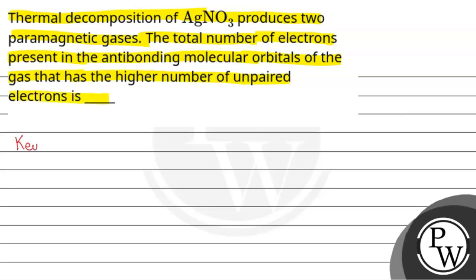The key concept here is molecular orbital theory. Molecular orbital theory क्या कहती है? कि जो atomic orbitals होते हैं, उनसे हम antibonding molecular orbitals और bonding molecular orbitals बनाते हैं। Basically, atomic orbitals से ही antibonding और bonding molecular orbitals बनते हैं।